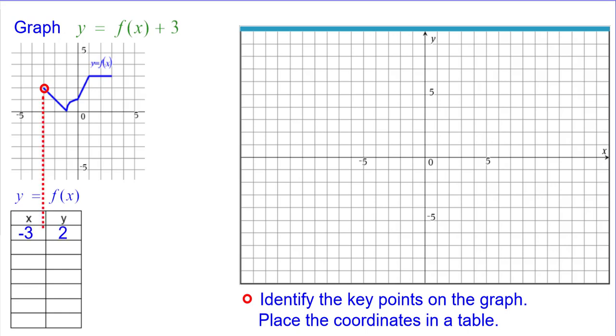(-3, 2) is our first point. Our next key point is at (-1, 0), followed by (0, 1), (1, 3), and (3, 3).